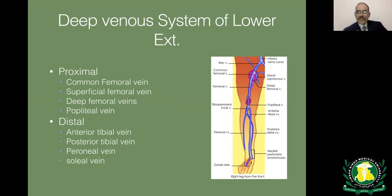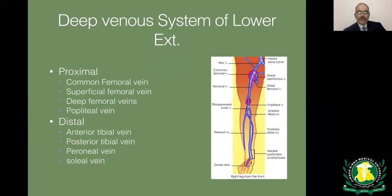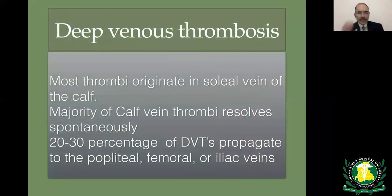Most clots form in the soleal vein, and the majority resolve on their own. Only 30% will propagate to involve the popliteal vein, where they can break off and produce venous thrombosis. The deep venous system of the upper extremities consists of the internal jugular vein and subclavian vein.